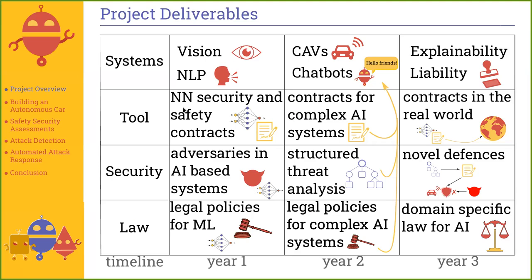As we all know now, as of the last five years, we've shown that AI systems are very fragile to adversarial attacks, and consequently we need new ways to defend these systems. To begin with, we first need to have a way to structure and reason about these systems. So the first objective for us was to find ways to adapt to the differences between traditional software and AI software in order to still be able to conduct structured risk assessment.